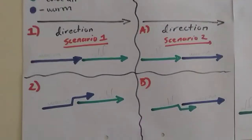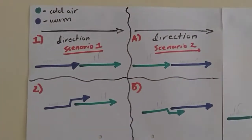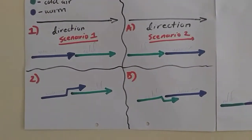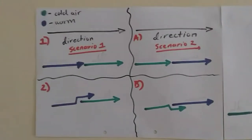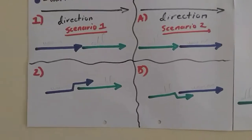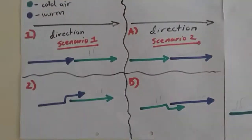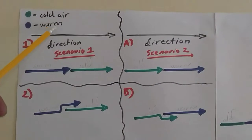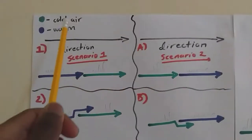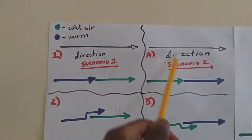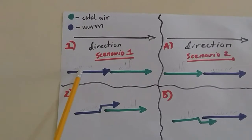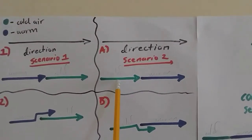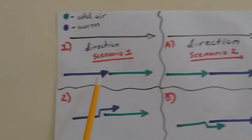Before I jump into the occlusion diagrams, here is an explanation I came up with on my own — I've never seen it anywhere. I hope it makes things easier. As you can see, the green dot represents cold air and the blue dot represents warm air. I have scenario one and scenario two, with the direction of air being the same in both. Here I'm asking: what happens when warm air catches up with cold air, and what happens when cold air catches up with warm air?